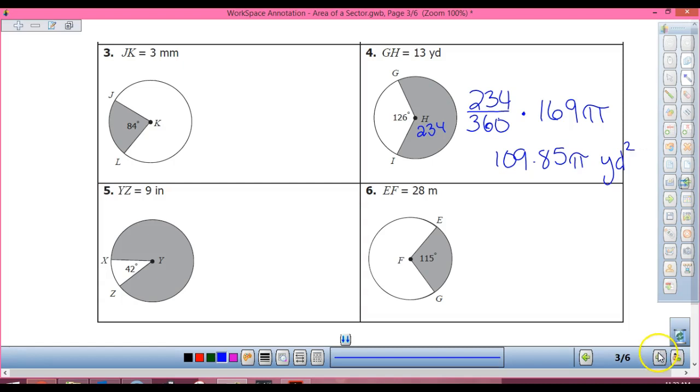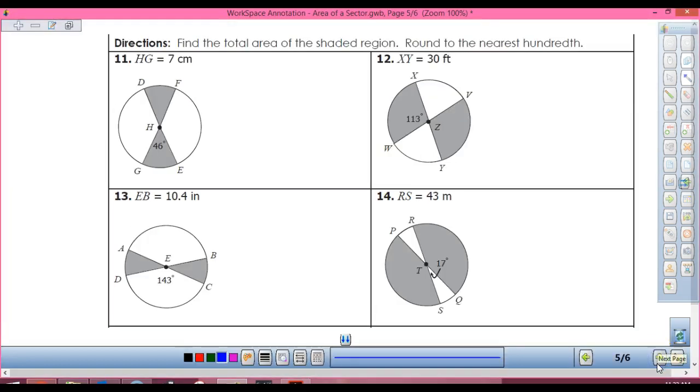Look at number 11. So if this guy's 46, what's this guy? So my shaded area equals 192 over 360 times 49 pi.